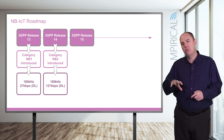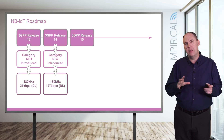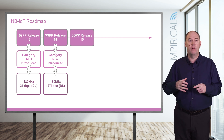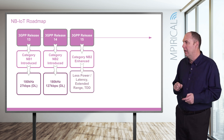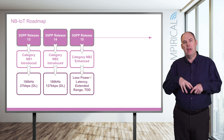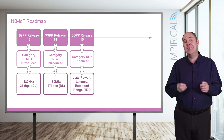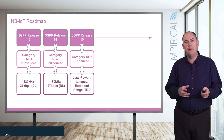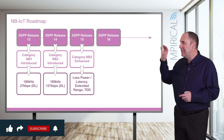Release 15 was a very big release because that's where 5G came into the 3GPP standards. However, it didn't significantly impact Narrowband IoT — NB-IoT at this point had nothing to do with 5G technology, it was still very much 4G technology. There were a few enhancements such as reduced power options, improved latency, extended range, and we added support of TDD — time division duplex.